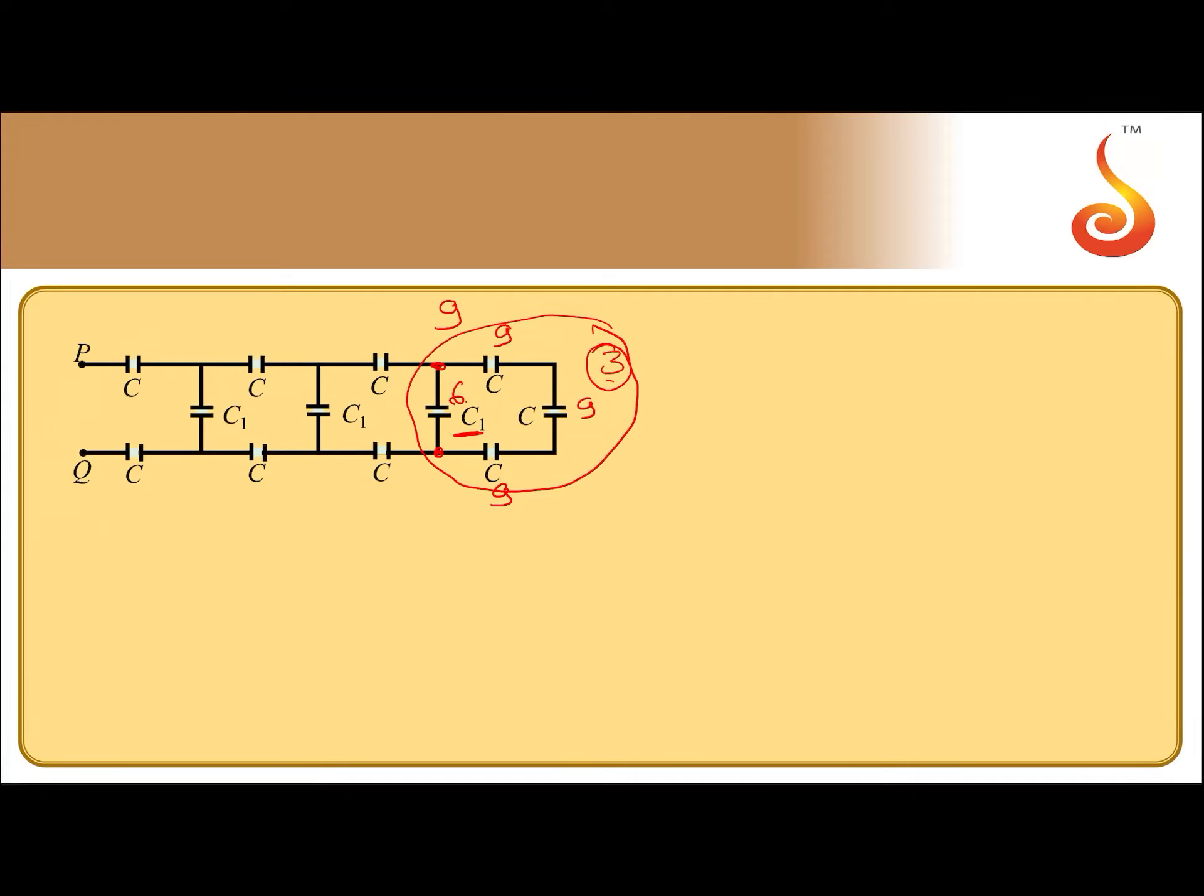Again 9, 9, 9 are in series, effective will be 3. 3 is in parallel with 6. So, again these two put together, it will be 9.